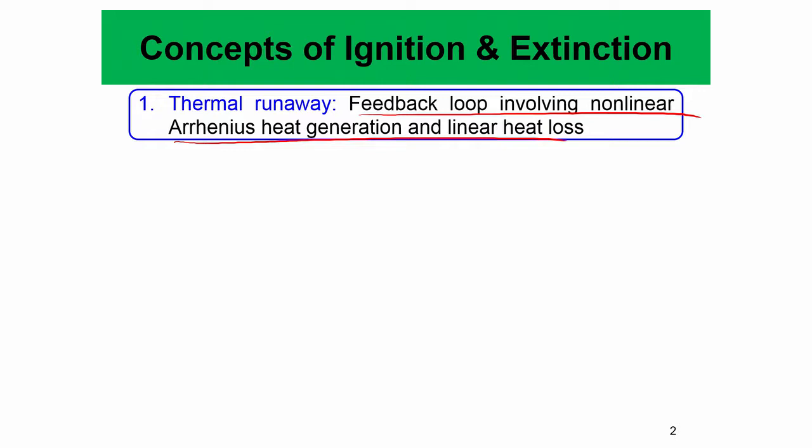After ignition, if temperature slowly increases, the local rate of reaction increases. This further increases temperature, which again increases the reaction rate. At the same time, heat loss also increases because the temperature difference with the surroundings increases. So on one hand you have highly non-linear Arrhenius heat generation, and on the other hand you have linear heat loss. The balance of these tells us whether ignition by thermal runaway is possible in a given mixture state.